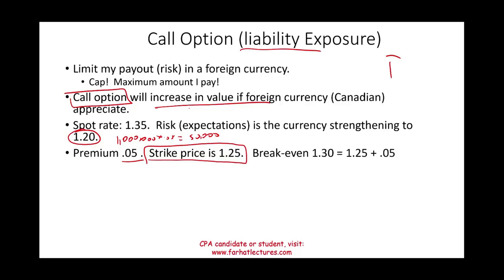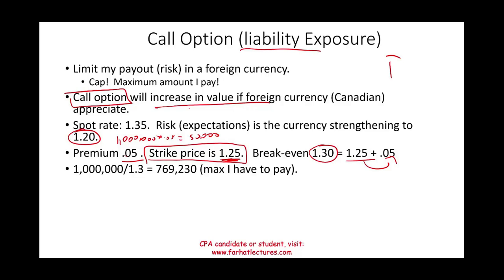Simply put: you paid 5 cents per CAD in premium plus a strike of 1.25, so your effective break-even rate is 1 USD = 1.30 CAD (strike plus the fee). If you exercise this option and exchange at 1.30, the maximum you have to pay is 1,000,000 ÷ 1.30 = $769,230. That gives you peace of mind — a bit more than today's spot of $740,740 — but you've put a firm limit on your payout.